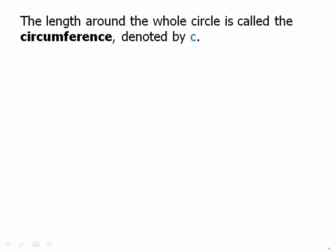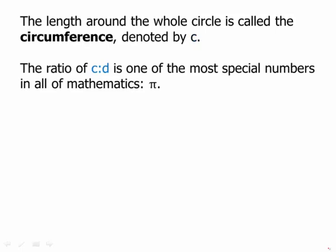The length around the whole circle is called the circumference, denoted by C. The ratio of C to D is one of the most special numbers in all of mathematics, pi. C equals pi times D. Circumference equals pi times diameter. We could also write that as circumference equals 2 pi times radius. That's actually a more useful form as we'll find in a few minutes.